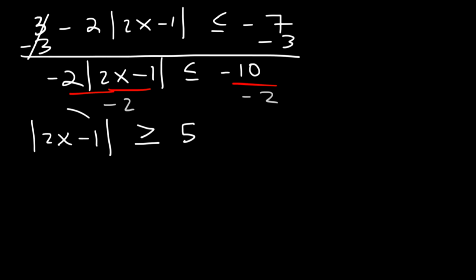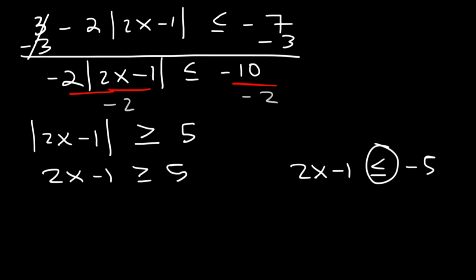Now since we have the absolute value expression on one side by itself with no other numbers outside of it, this is when we can write two equations. 2x minus 1 is greater than or equal to 5 and 2x minus 1 is less than or equal to negative 5. Don't forget to change the direction of the inequality.